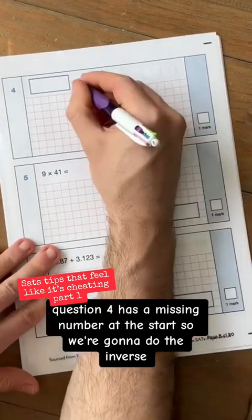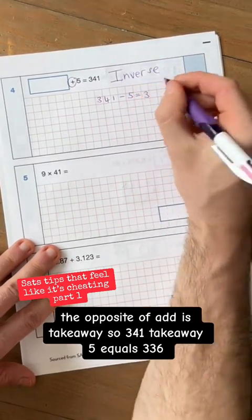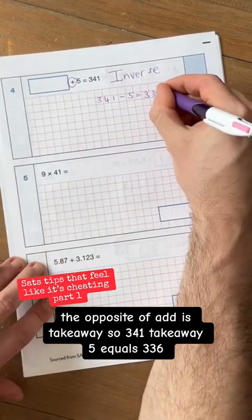Question four has a missing number at the start. So we're going to do the inverse. The opposite of add is take away. So 341 take away 5 equals 336.